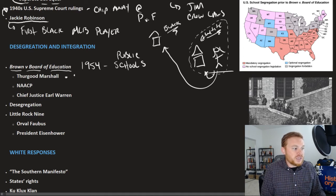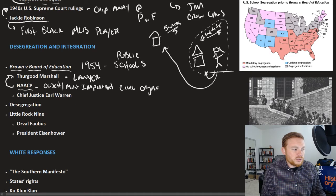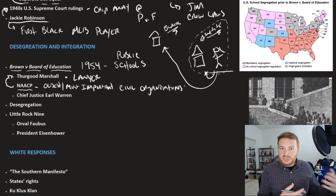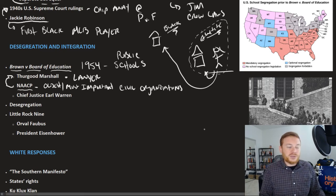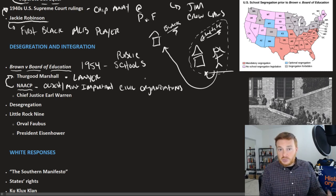Thurgood Marshall was a lawyer funded by the NAACP — the oldest and probably most important civil rights organization, founded by W.E.B. Du Bois. The NAACP would look out for court cases around the country challenging discrimination, send their best lawyers, provide funds, and try to win legal battles. In the 1940s and 1950s, they were succeeding. Thurgood Marshall made the case against segregation in schools during the Brown v. Board of Education decision.